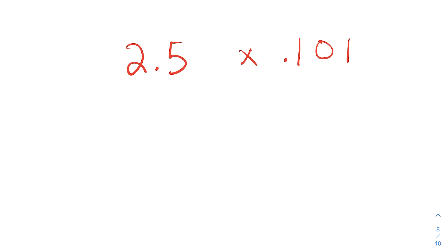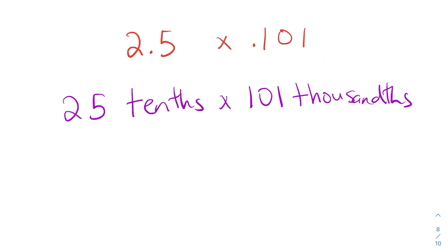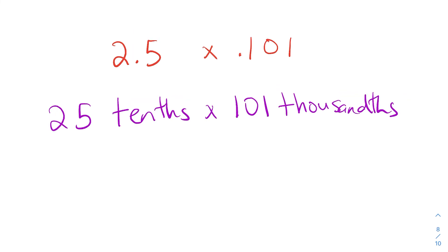Well, the first step is to rename the decimals. And we've got 25 tenths times 101 thousandths. If you were stuck, the next step is to multiply 25 by 101. After that, you're going to get a number and then it will be tenths times thousandths. Or in other words, you would multiply 10 times 1000. Can you try and figure out the answer now?